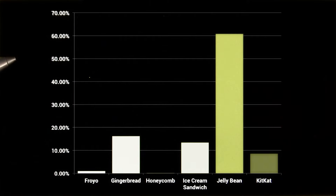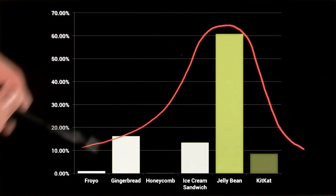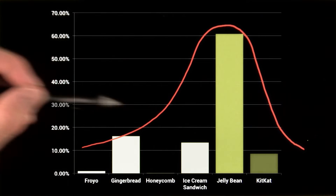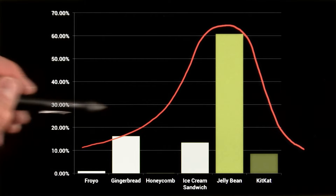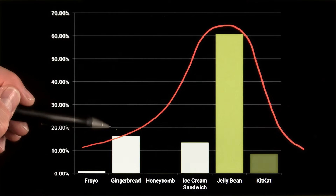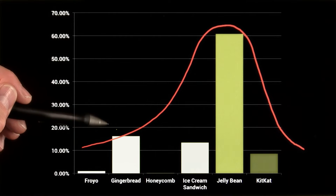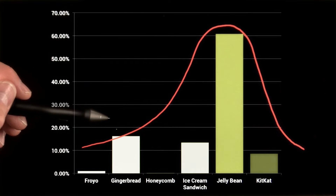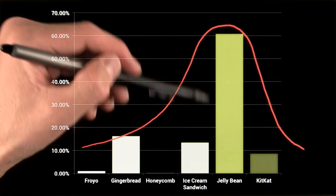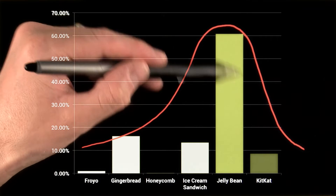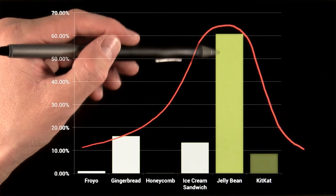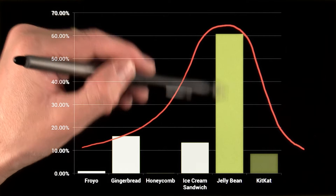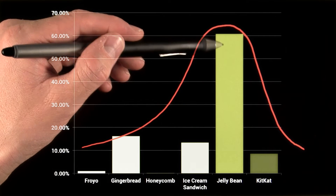If you squint, you can almost see a vaguely bell-shaped curve, with the oldest releases here at the left, their popularity dropping off as devices are upgraded or replaced. The largest proportion of devices are here in the middle.